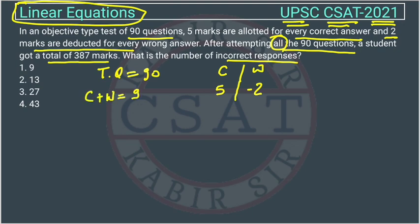Because the total questions are 90, for every correct answer there are 5 marks, so the total marks will be 5C. But there are some negatives, so minus 2 marks are allotted, which will be minus 2W for the wrong answers.